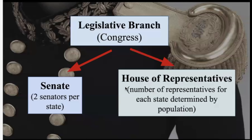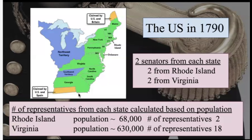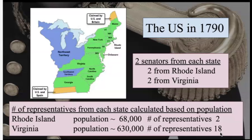The number of representatives for each state is determined by the population of that state. You are looking at the map here at the totality of the United States in 1790. All of the states had and have two senators each, regardless of size. Rhode Island, little bitty Rhode Island, had two senators. Virginia, relatively massive Virginia, had two senators and still has. But when it came to representatives, the number was calculated based on population. In 1790, Rhode Island had a population of about 68,000 and had two representatives. Virginia had a population of around 630,000, not quite ten times as much, and had 18 representatives. At the time, senators were chosen by state governments — this would change to direct election later in our class.